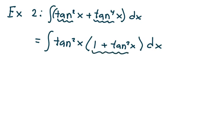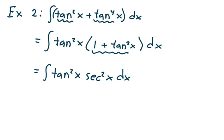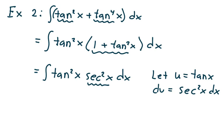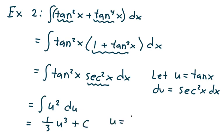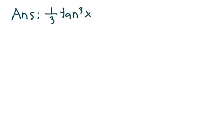I notice that 1 plus tangent squared x is secant squared x. So I'm going to write this as tangent squared x times secant squared x dx. We have tangents and secants, and a secant squared has already been picked off, with everything else written in terms of tangent. So I let u equal tangent x, du is secant squared x dx — another u-substitution. This is the integral of u squared du, which is one-third u cubed plus c. Since u is tangent x, the answer for example 2 is one-third tangent cubed x plus c.